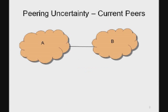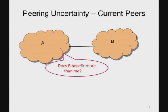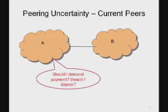The motivation for this talk is that, as researchers looking at the operational community from the outside, we see some amount of uncertainty when it comes to negotiating peering contracts. Consider two networks, A and B, that decided to become settlement-free peers. Eventually, one of these networks, A, starts wondering: why is B still a settlement-free peer? Does B actually benefit more from this link than I do? Should I try to demand payment? Should I threaten to depeer the network if B doesn't pay me?